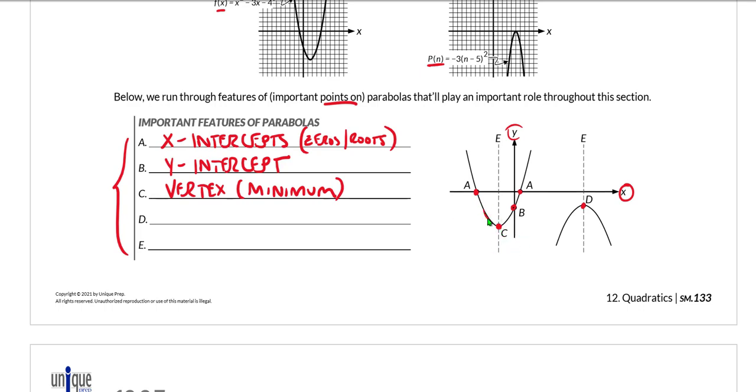Point C does represent a vertex. And again, all a vertex is is where the parabola goes from being decreasing to increasing or increasing to decreasing. It's sort of the turning point. However, what is most important about points C and D? Let's actually write down vertex maximum over here.